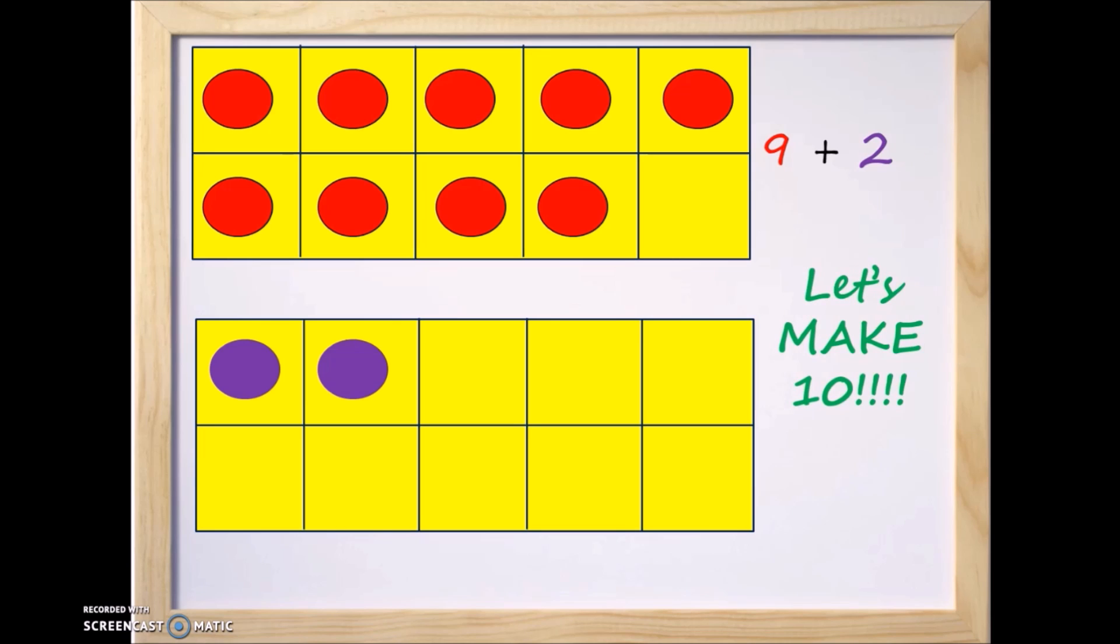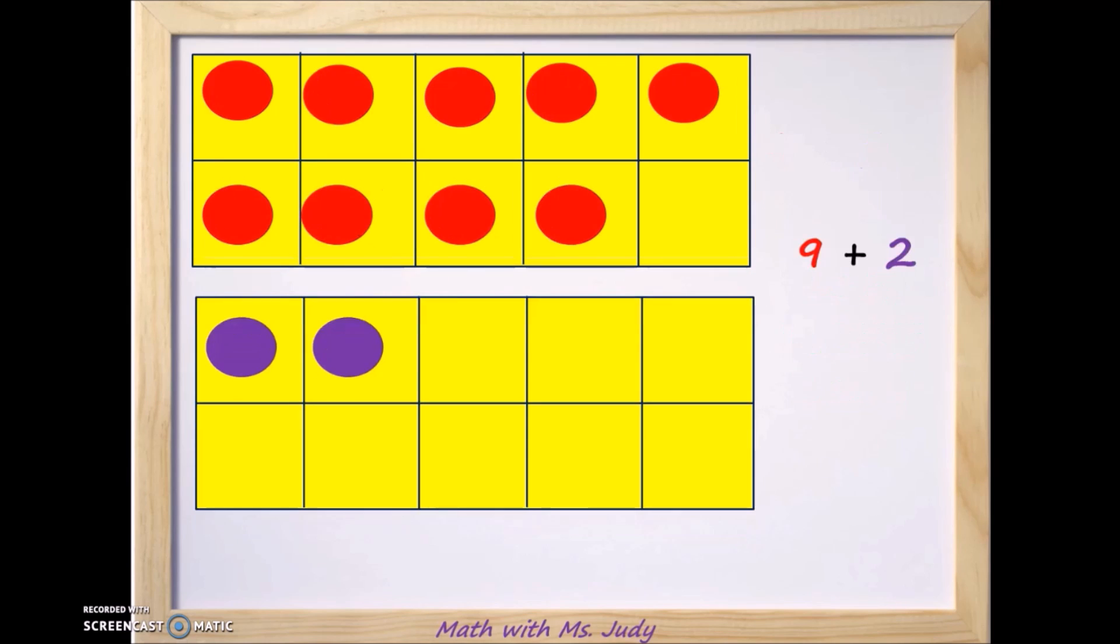So let's look at the top 10 frame. We have 9 counters there. Now how many more do we need to make 10? Well, we have one more available, one more slot. So where are we going to get that counter from? Well, we're going to take one of the counters from the number 2. So let's grab one of the purple counters, and let's move that up here.